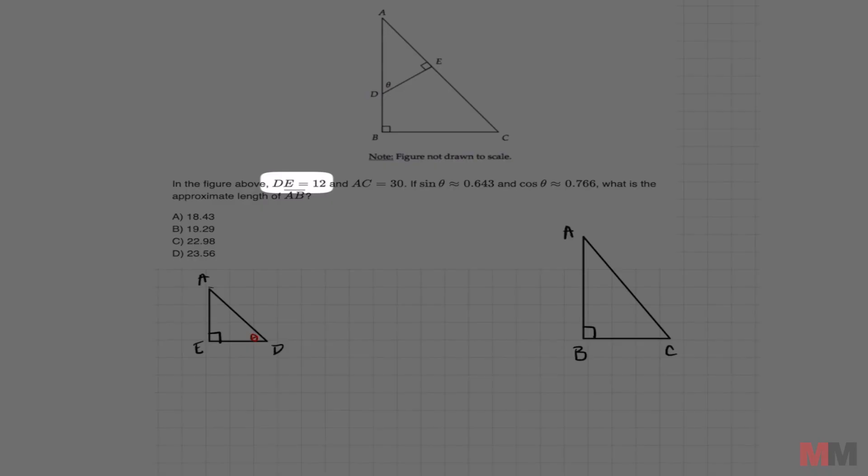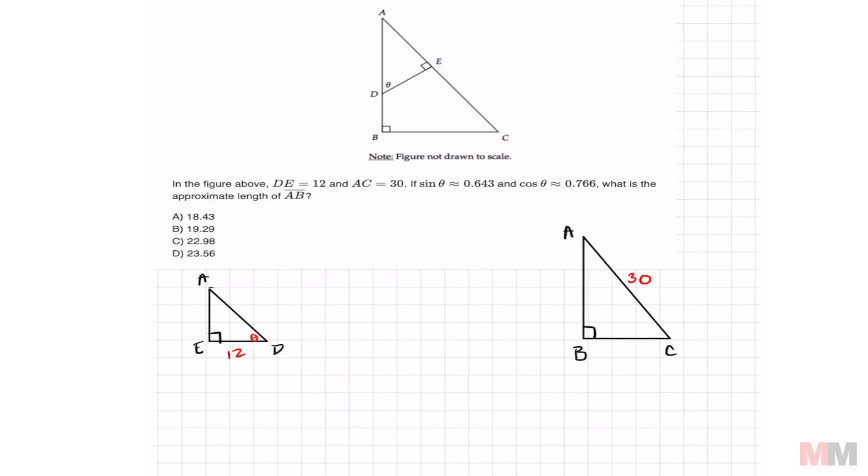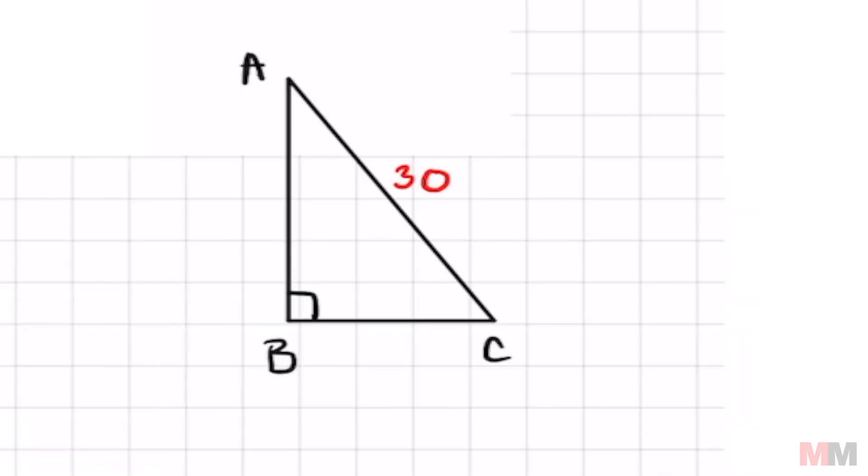Let's label everything that we're given. DE is 12 and AC equals 30. We're trying to find the length of AB and let's call that X.